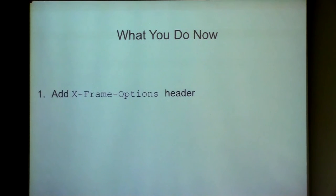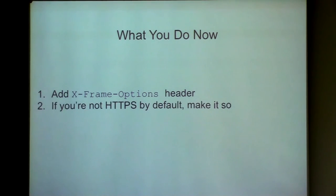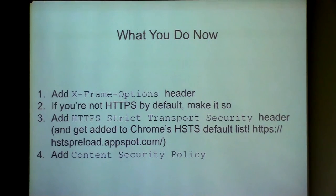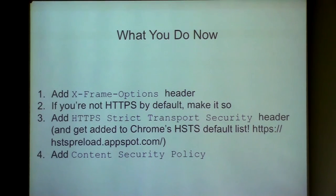Here's what I recommend when you go back to work: X-Frame-Options first — the simplest, most straightforward, with about two ways to set it with deny or sameorigin. Next, go HTTPS if you're not already, then add an HSTS header so all communications are encrypted by default when visitors come by. Finally, begin tackling content security policy. As we heard from Xenia, don't try to tackle the whole thing at once — it's best to integrate it in brand-new applications. Taking WordPress and slapping CSP on it is a little tricky. Take it little by little and it's not that big of a deal.